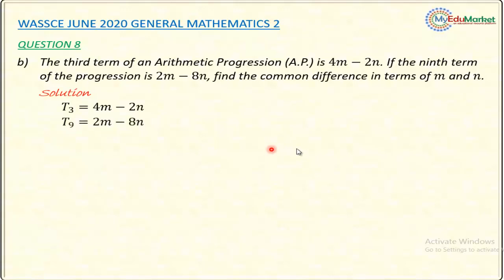Similarly, term number 9, that is the ninth term, is 2M minus 8N.